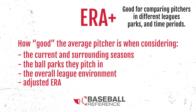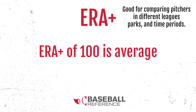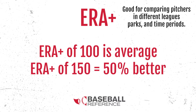It takes regular ERA and normalizes it across the league. An ERA Plus of 100 is average. If a pitcher has a 150 ERA Plus, that pitcher is considered to be 50% better than the league average.